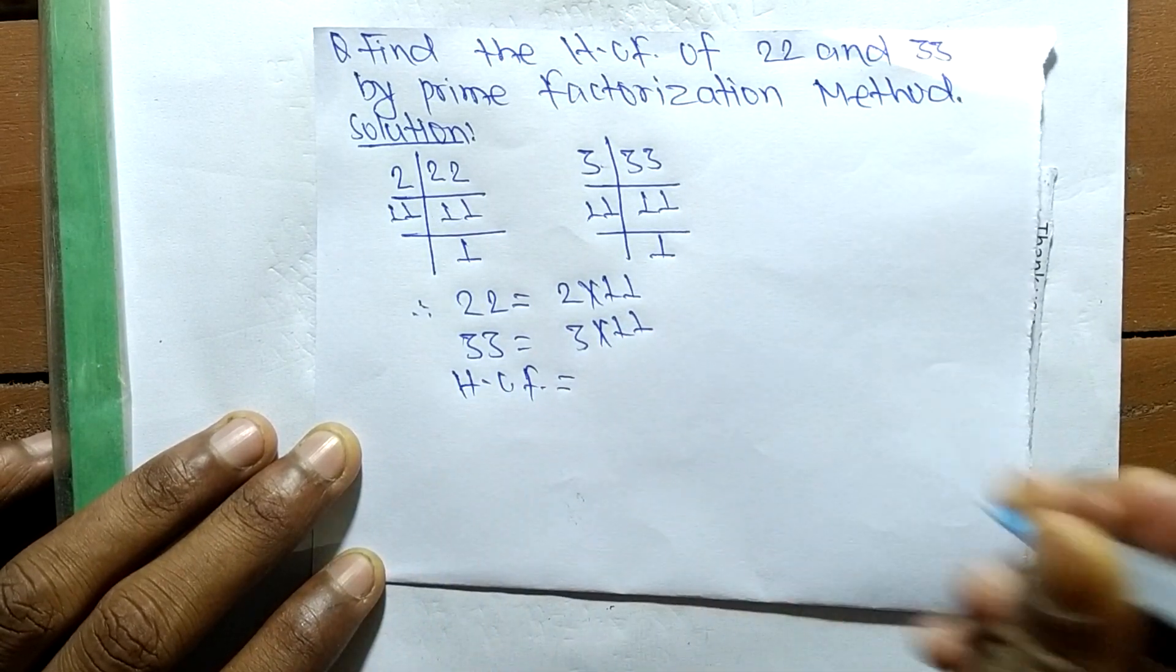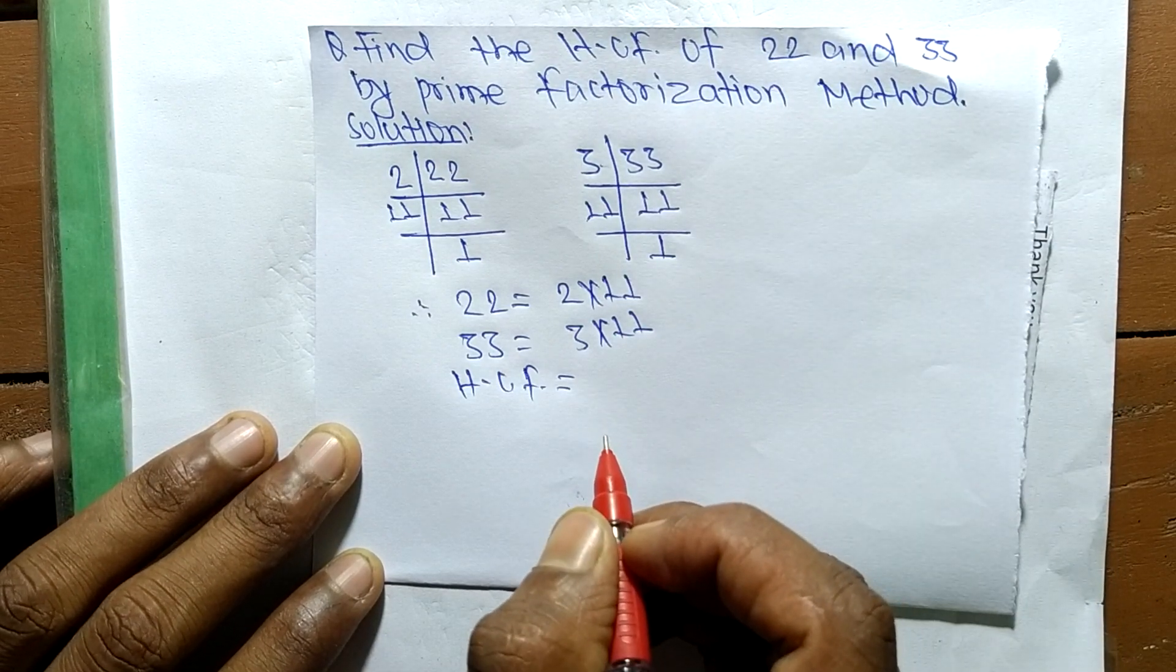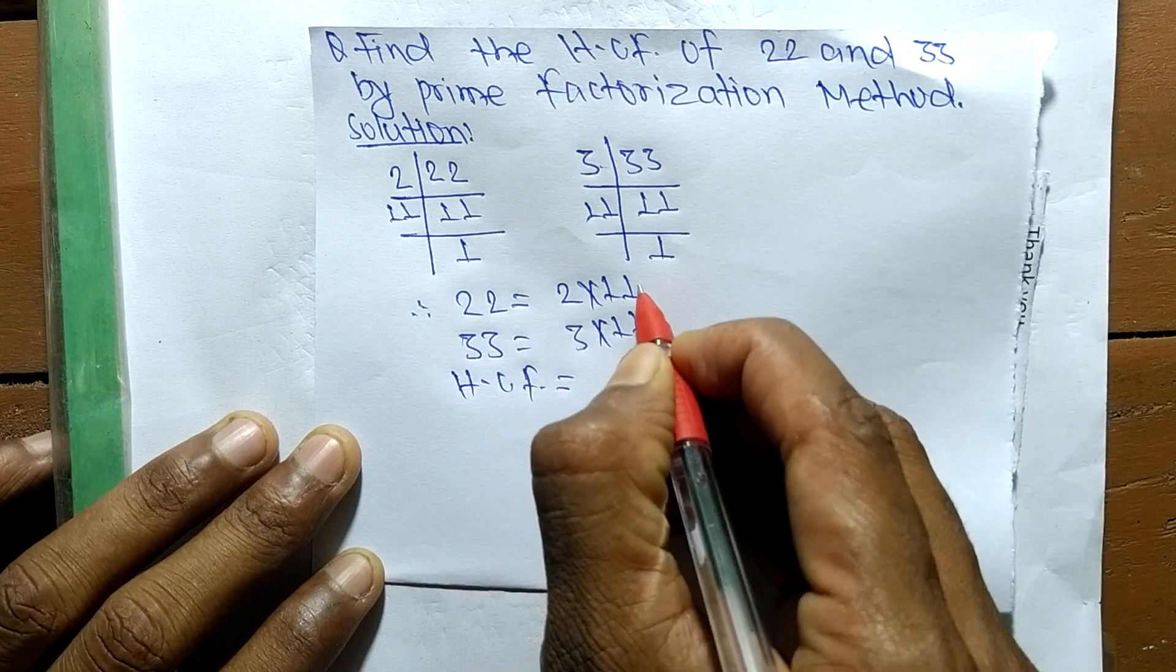So now its HCF is equal to, now we have to find out the common factors in the prime factors of 22 and 33.